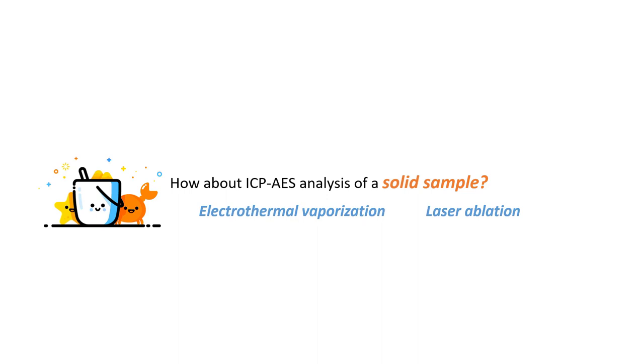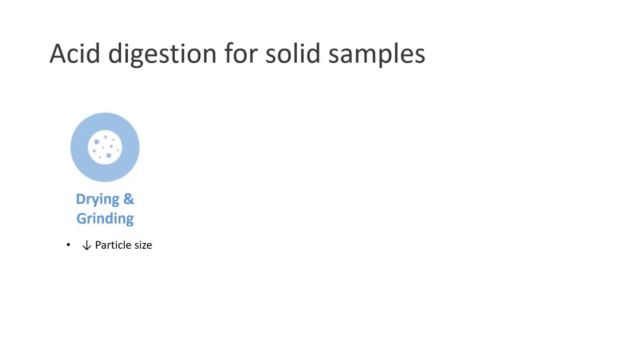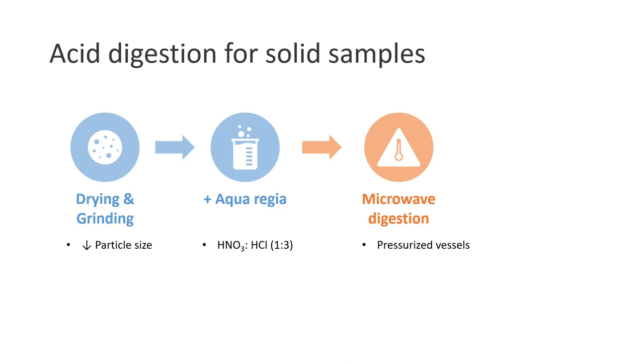Acid digestion usually involves the dissolution of a solid sample in a hot acid. For example, if we would like to analyze soil samples, we'll need to dry the sample and grind them into smaller particles. Then we can treat the sample with aqua regia, which is a one-to-three mixture of nitric acid and hydrochloric acid, followed by heating the mixture using a microwave digestion system that employs pressurized vessels to produce an even higher extraction temperature.